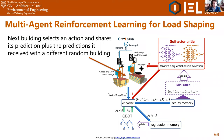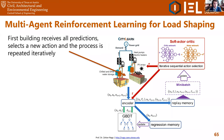In short, every building will know the expected aggregated electricity consumption from all buildings before it in the queue before taking an action. Knowing that information allows more accurate decisions — if one building sees that most buildings before it are going to consume a lot of energy, it might decide to consume less, achieving a degree of coordination. This process is not only sequential but also iterative: once all buildings have shared information, the last building shares the information again with the first building, which selects a new action and the whole process repeats through different iterations.